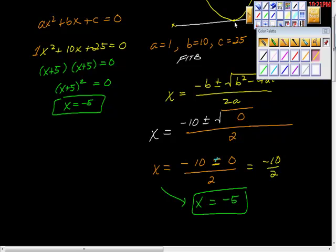And that would make this the point, that would make this the point negative 5, 0. Negative 5, 0.